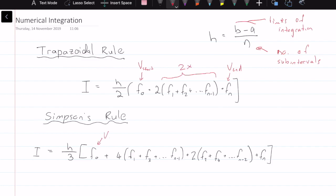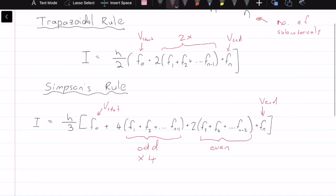Again, we have the start, the starting value, the end, we do nothing to these values. The n minus 1 values, the odd values are multiplied by 4, and the even values are multiplied by 2.